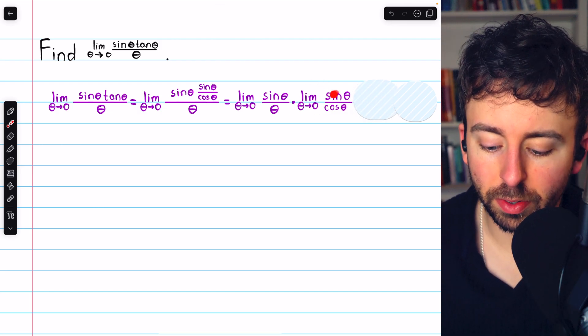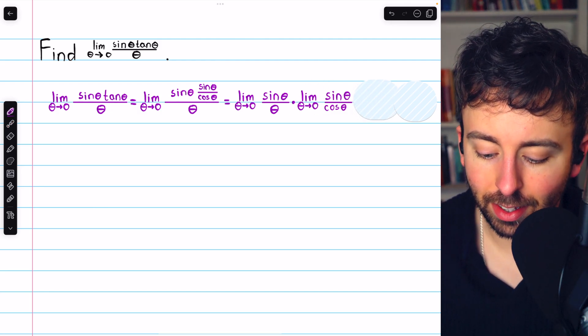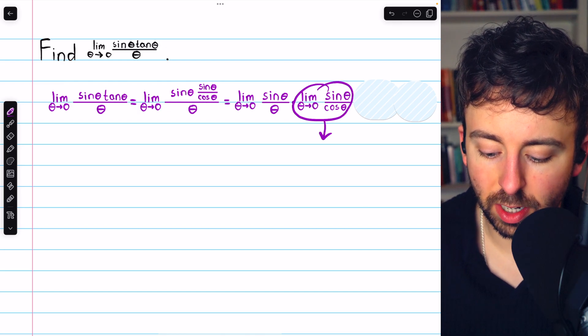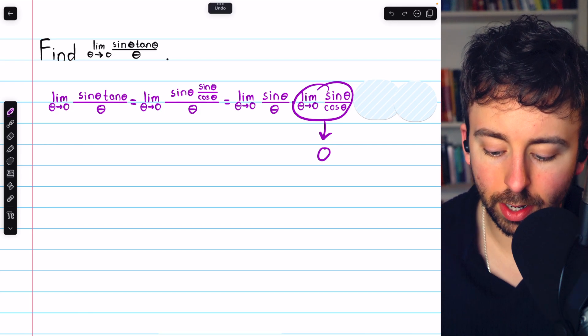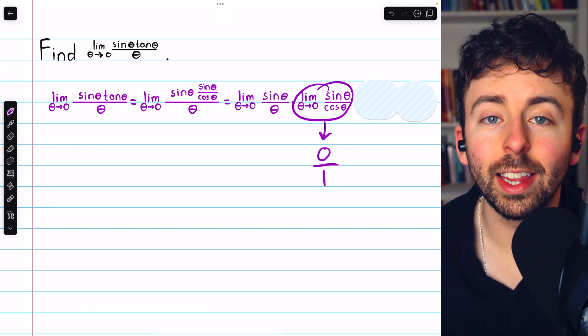With tangent written as sine over cosine, it's easy to see that this limit evaluates to zero because sine of zero is zero and cosine of zero is one. So it's just zero over one. That's zero.